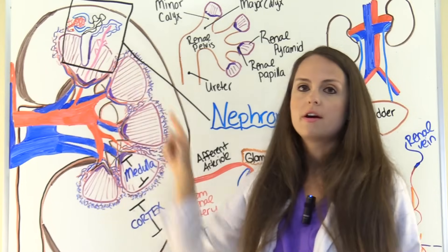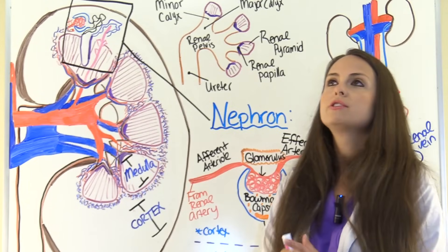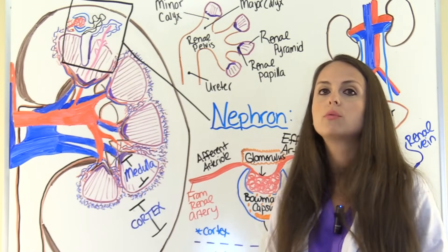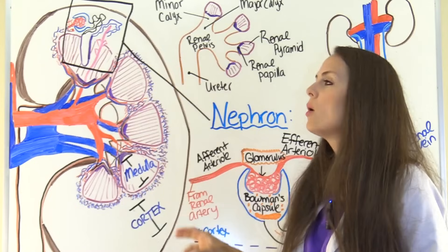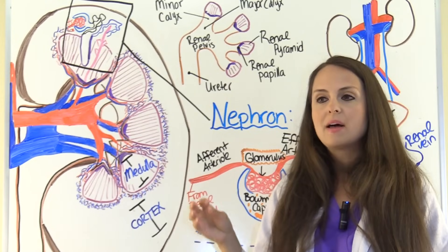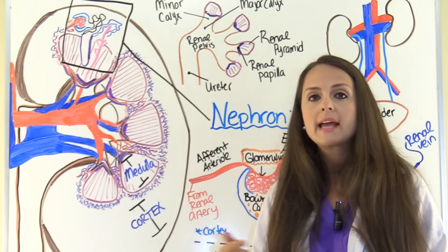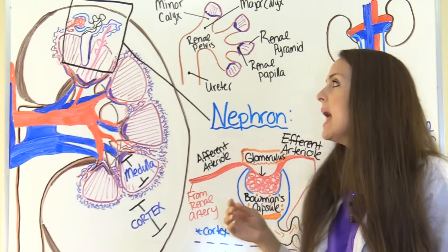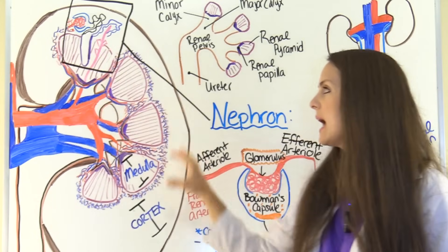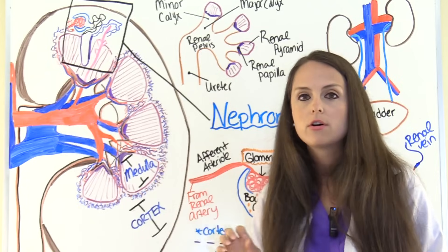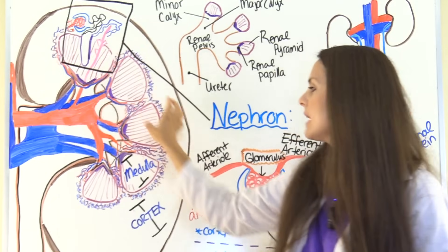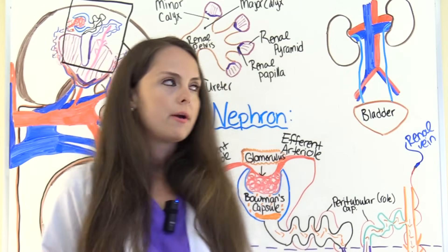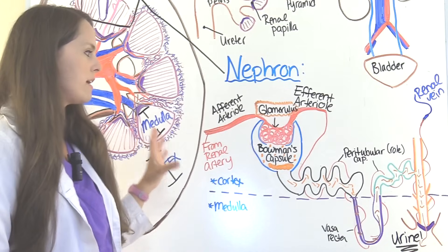Now let's look at the nephron. If you're going to remember anything about the kidney, the nephron is what you need to remember, because this is the functional part of the kidney that allows it to filter, reabsorb, and secrete waste and things we don't need, turning them into urine. Each kidney contains millions of these little nephrons. So let's dissect a nephron — here is a basic structure. If you took a nephron and just stretched it out, it would allow you to see these different parts.